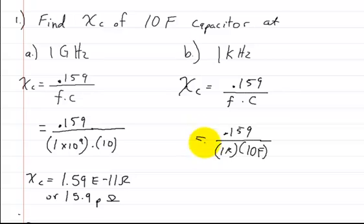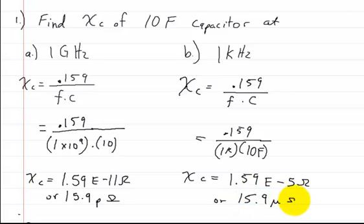And then for this, if you plug that into your calculator, you're going to come up with 1.59 E to the negative 5 ohms. Or you could just write it as 15.9 micro-ohms. And that's how you would solve those two.